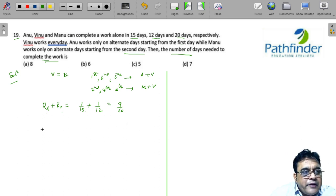Similarly, on even days it is Manu who works with Vinu. So work done by Manu and Vinu on even days starting with the second day will be 1/20 plus 1/12. So we have 3 plus 5, 8/60th.